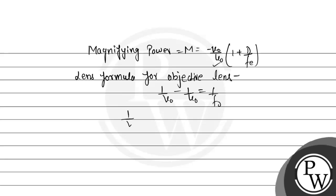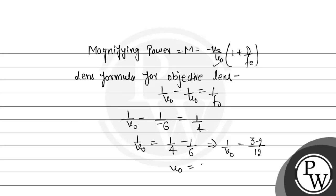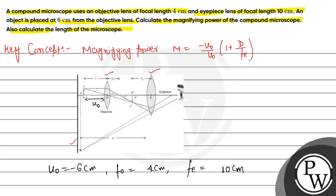V0 is what we need to find. U0 is given as minus 6 cm and F0 is 4 cm. From here, 1 upon V0 equals 1 upon 4 plus minus 1 upon 6 — the two negatives give a plus. So 1 upon V0 equals LCM 12, giving 3 minus 2, so V0 equals 12 cm. The image is formed at 12 cm from the objective lens.